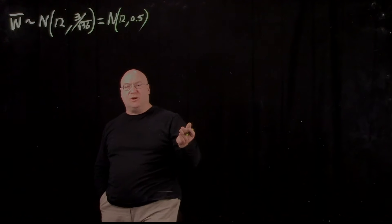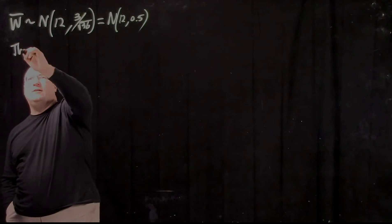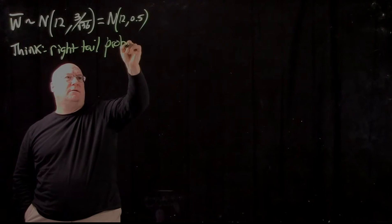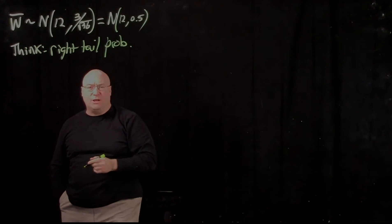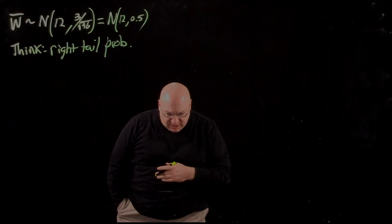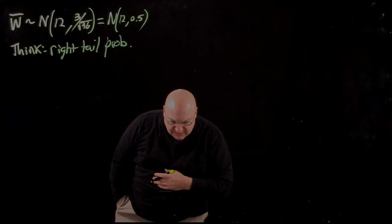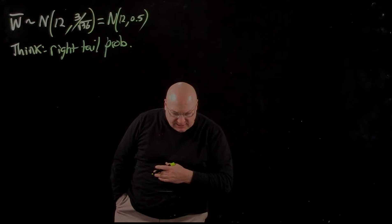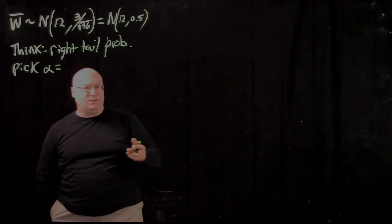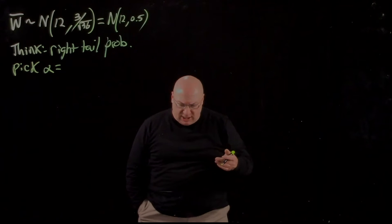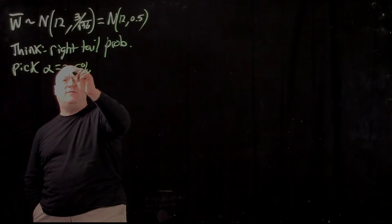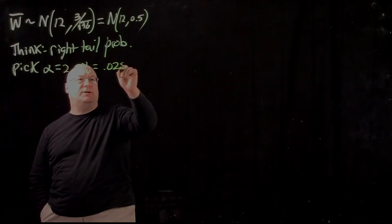So is it bigger? I'm thinking of the right tail probability. We're going to worry about the right tail probability. So the question is, is 13.6 big enough? I'm going to pick alpha, which may have been given to us externally, to be 0.025. So there's my cutoff for unusualness in terms of the tail probability.